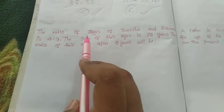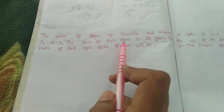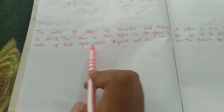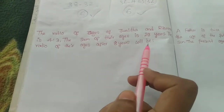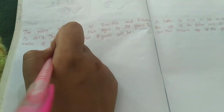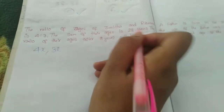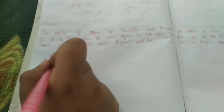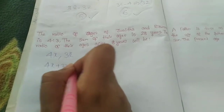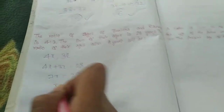Coming to the next question: the ratio of ages of Jwalita and Rizvana is 4 to 3. The sum of their ages is 28 years. The ratio of their ages after eight years will be what? The ratio of ages of Jwalita and Rizvana is 4 to 3, which means let Jwalita be 4x and Rizvana be 3x. One more information: sum of their ages is 28 years, which means 4x plus 3x equals 28, so 7x equals 28, meaning x equals 4.